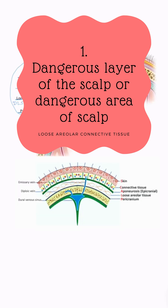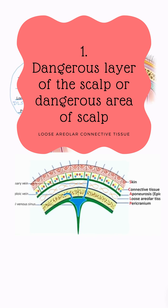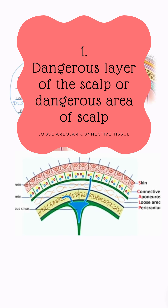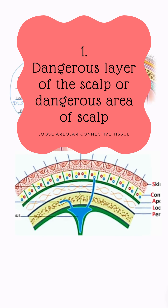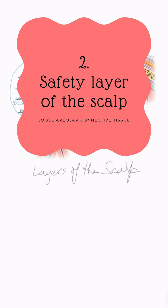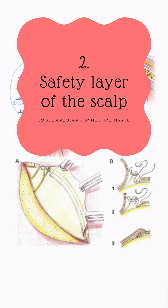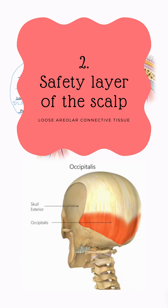The fourth layer — loose areolar connective tissue — is also called the dangerous layer of the skull. This is because emissary veins pass through it and can easily rupture here. Infection from the skull can travel through these emissary veins down into the dural venous sinuses, causing intracranial infection. However, this fourth layer is also called the safety layer of the skull, because above it are the three surgical layers and below is the periosteum. Blood deposited here as a sub-galeal hematoma is not restricted.